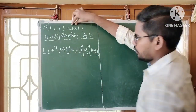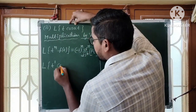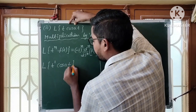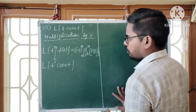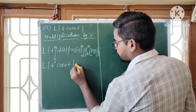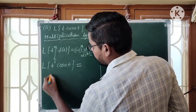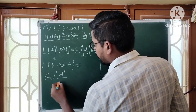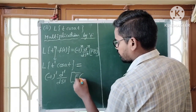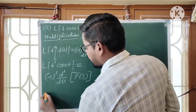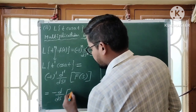Looking at this question, we have the Laplace transform of T^1·cos(AT). Here N is equal to 1. Applying the formula with N=1 gives us minus d/dS of F̄(S).